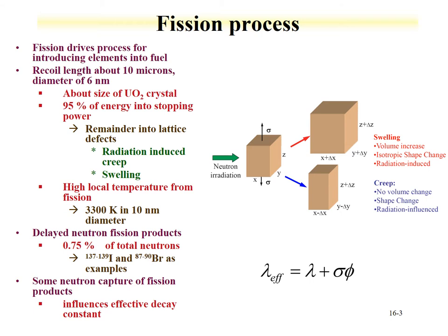The fission process is necessary in reactors for the production of heat and ultimately electricity. It is also the source for the introduction of other elements into the fuel, whether fission products or actinides through capture. In the fissioning process, fission products will recoil about 10 microns in UO2 with a diameter range of about 6 nanometers, so there is very little straggling. This happens to be on the order of the size of a UO2 crystal. We already talked about Frenkel pair production and the defects that will be formed.